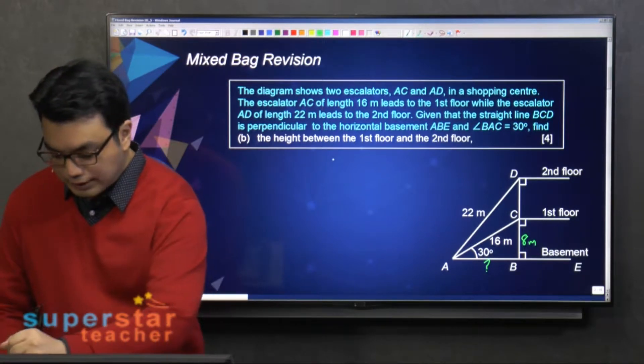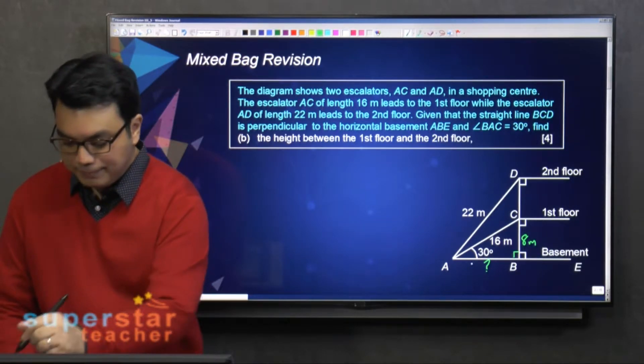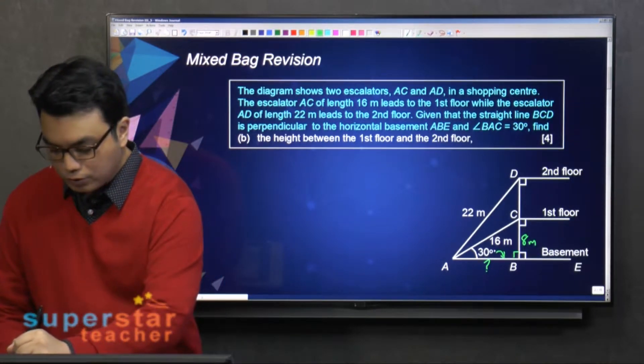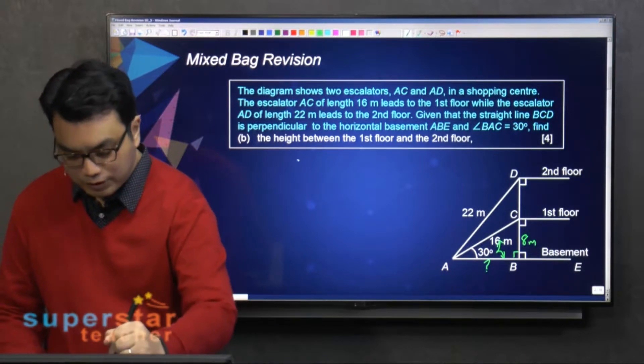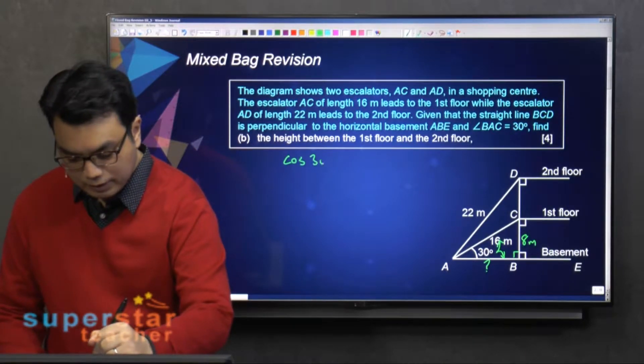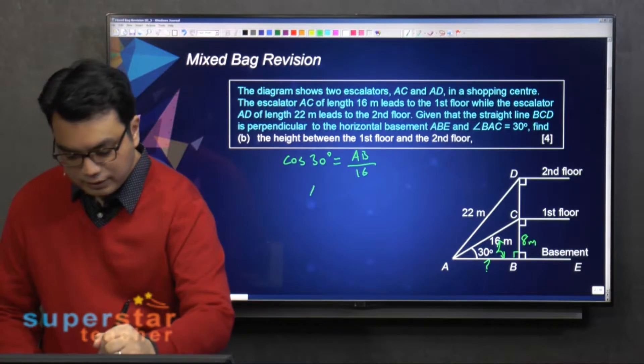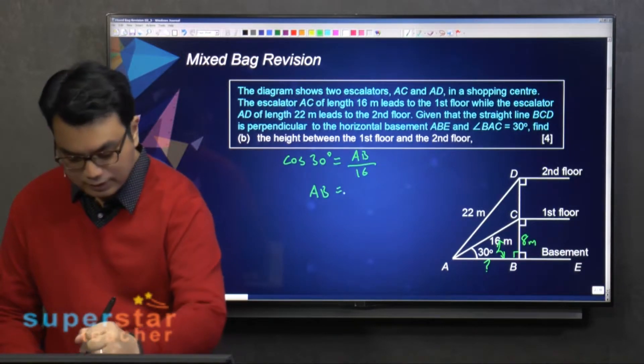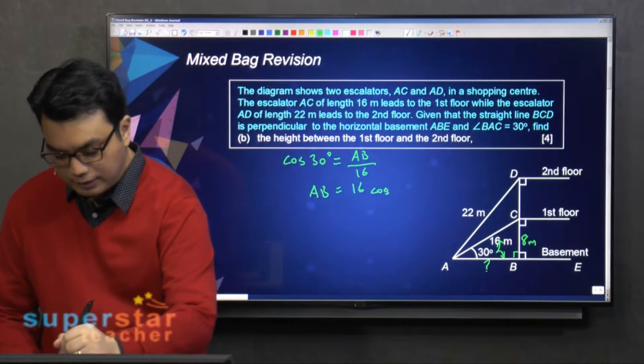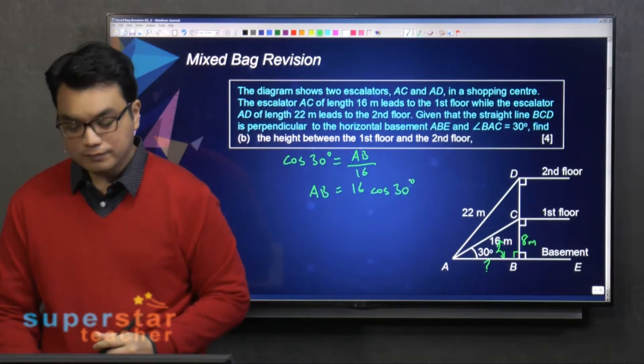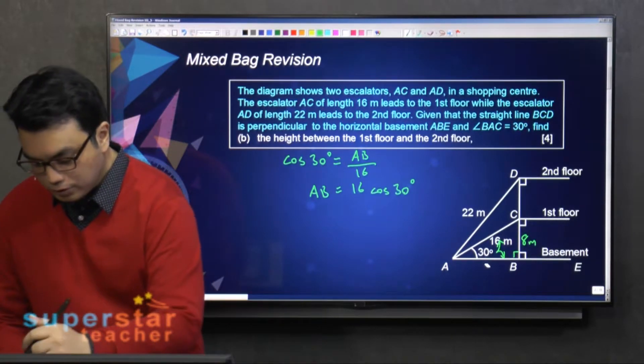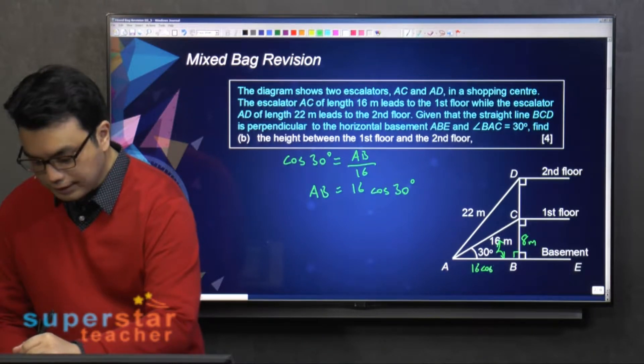So using this right-angled triangle ABC, adjacent over hypotenuse, that will be cosine 30 degrees equals AB over 16. So AB is 16 cosine 30 degrees. Alright? So this is 16 cosine 30 degrees.